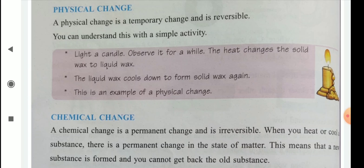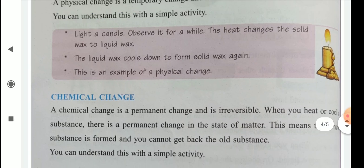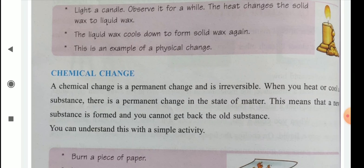But what is chemical change? A chemical change is a permanent change and is irreversible. Means we cannot get back the initial material. When you heat or cool substance, there is a permanent change in the state of matter. This means that a new substance is formed and you cannot get back the old substance.